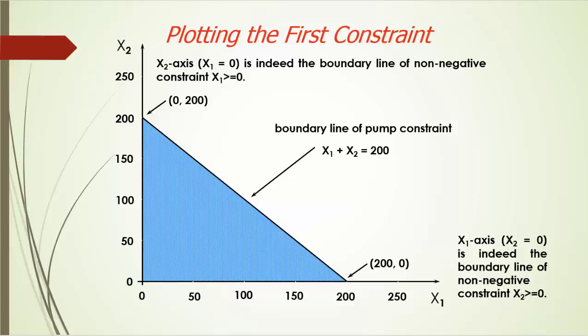Think about it — what if the constraint is x1 minus x2 less than or equal to 0? What would be the boundary line and which side is feasible? Now, putting together the two non-negative constraints and the pump constraint, we end up with a highlighted triangle on the graph. This triangle contains all the points or product mixes that satisfy both non-negative constraints and the pump constraint. Anything outside this triangle will be infeasible because it violates at least one of these three constraints.